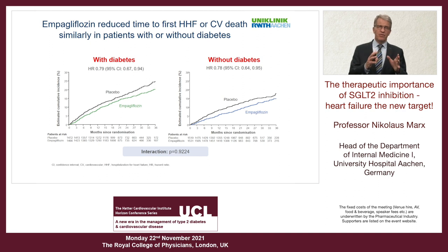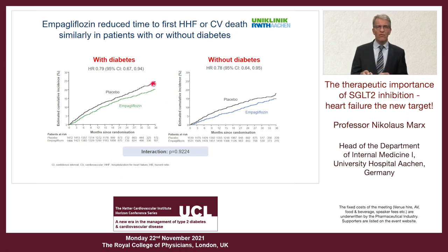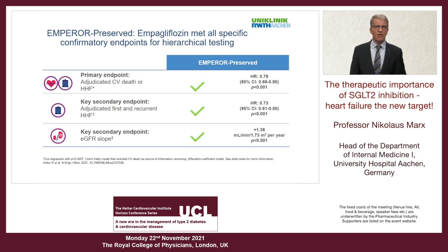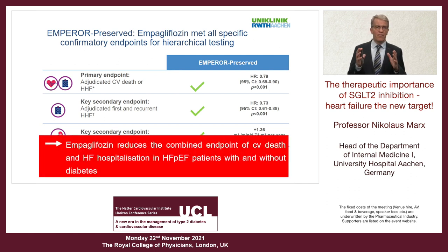The study included approximately 50% patients with diabetes and 50% without. Looking at the placebo group, patients with diabetes and HFpEF had an elevated risk. But irrespective of the presence of diabetes, empagliflozin reduced the primary endpoint — the p-value for interaction was not significant, again confirming this is totally independent of diabetes. In summary, empagliflozin significantly reduced the primary endpoint, reduced first and recurrent heart failure events, and also reduced the eGFR slope, in HFpEF patients with and without diabetes.